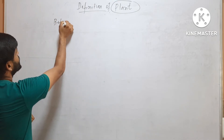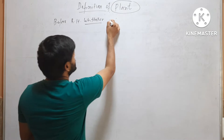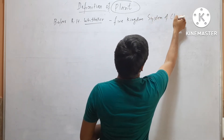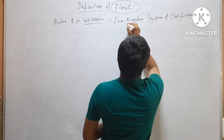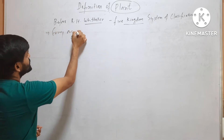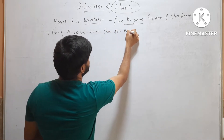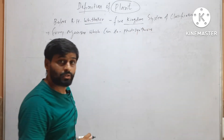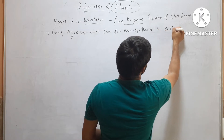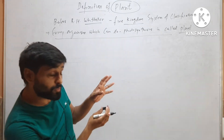Before R.H. Whittaker gave the 5-kingdom system of classification, every organism which can do photosynthesis was called a plant. So, any organism that can do photosynthesis was called a plant before R.H. Whittaker.